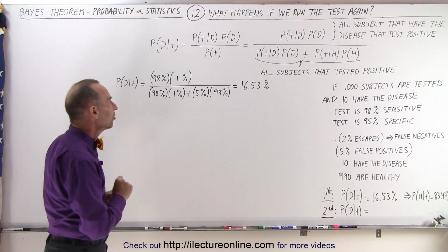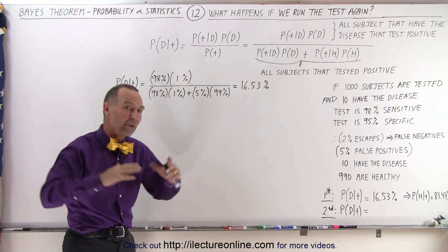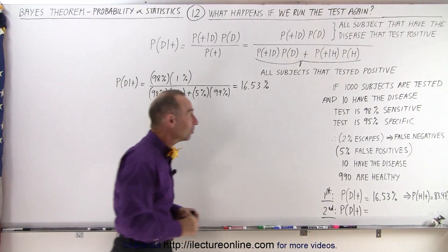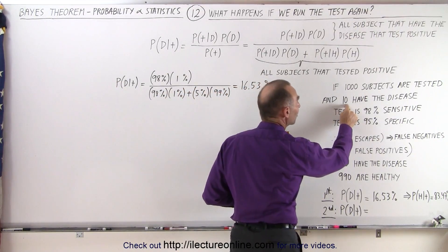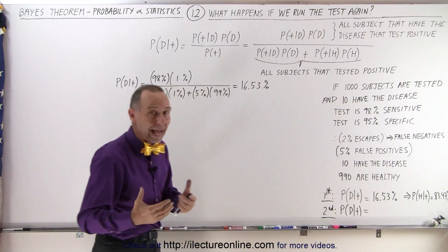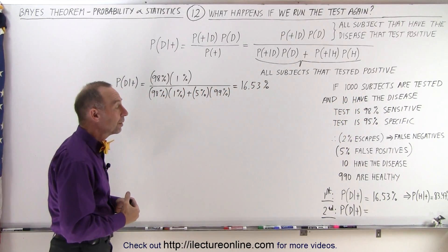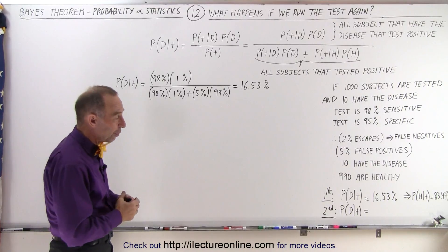But what doesn't stay the same is that in the past when we tested a population of a thousand, we'd only have a 1% probability that the person being tested actually does have the disease or the condition that you're testing for.